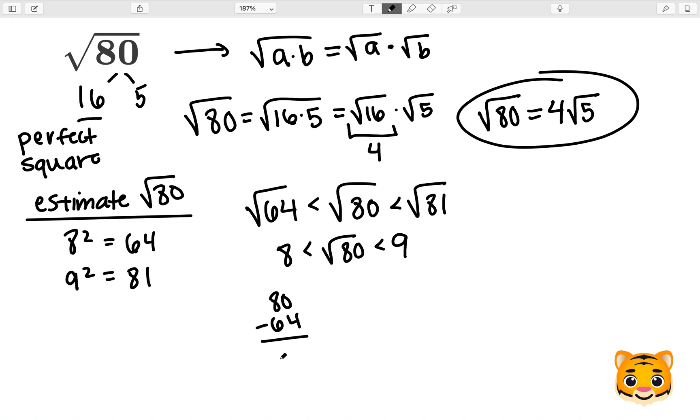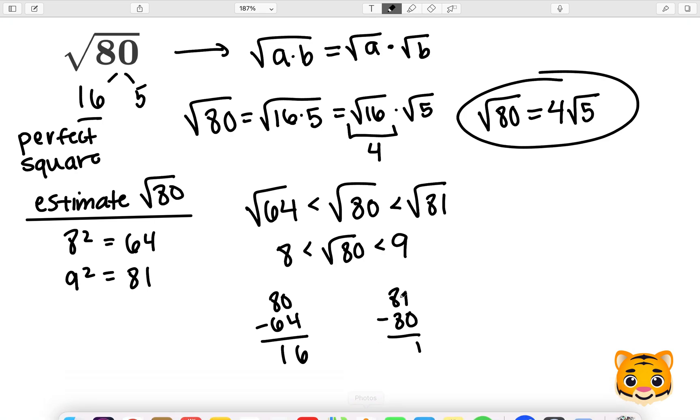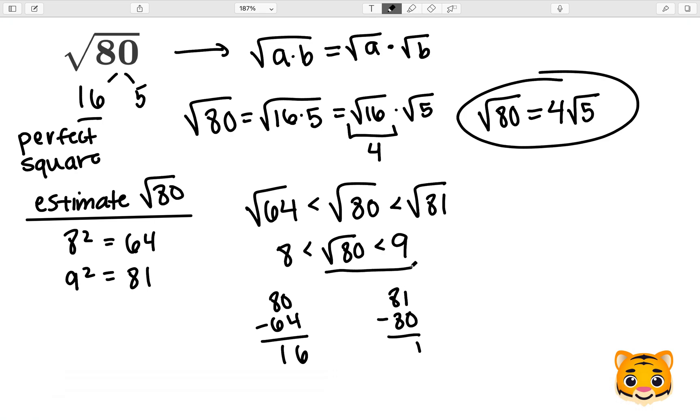So to do 80 minus 64, we will get 16, and then 81 minus 80 gives us 1. Therefore we can see that 81 and 80 are the closest in value, so the square root of 80 will be the closest to 9. We can then write the square root of 80 as approximately 9.